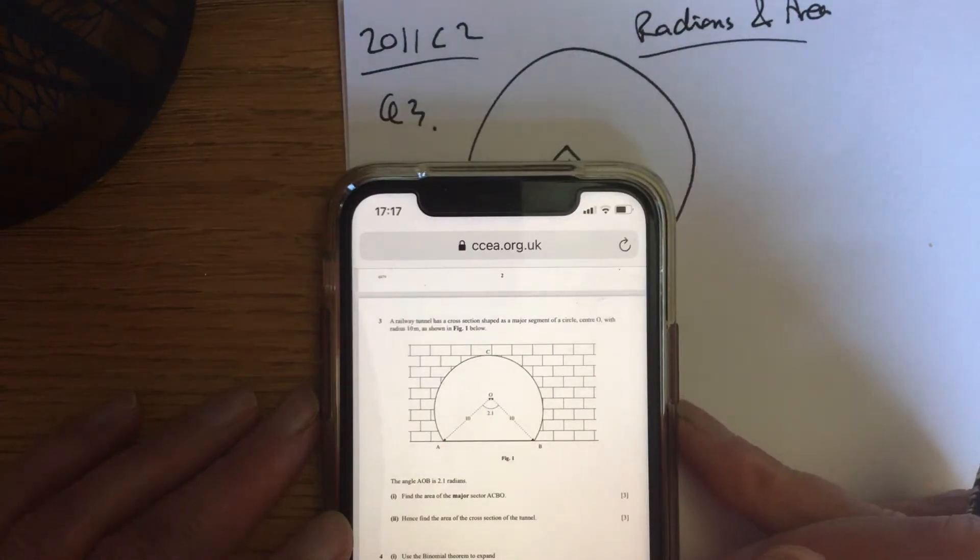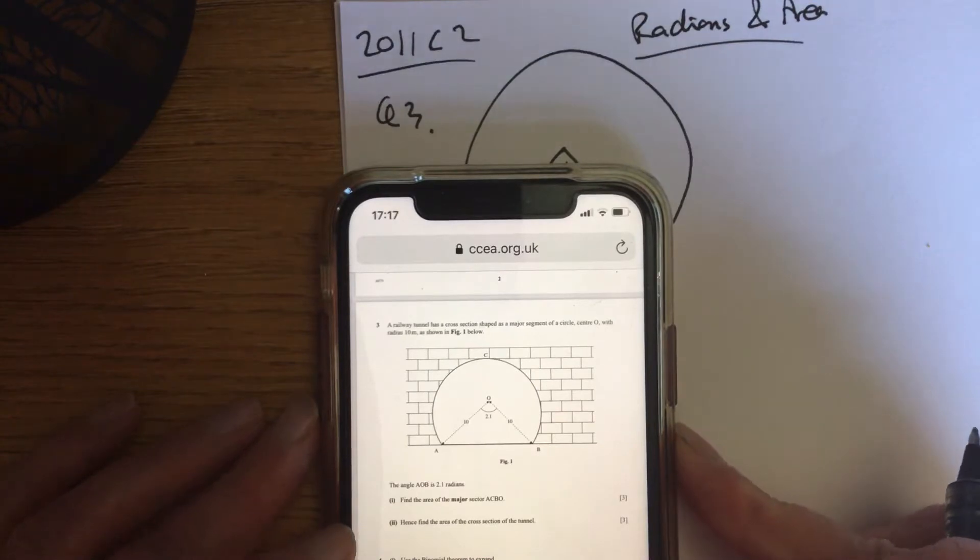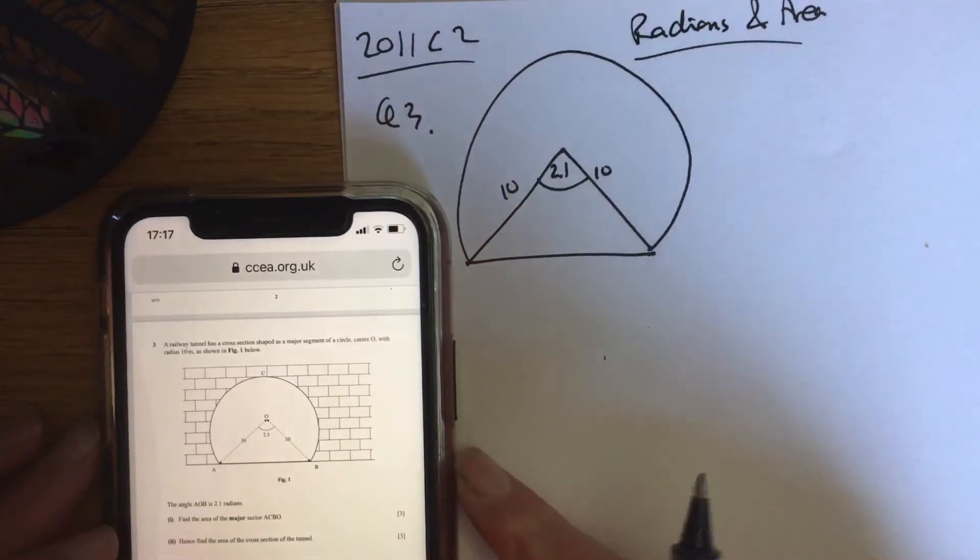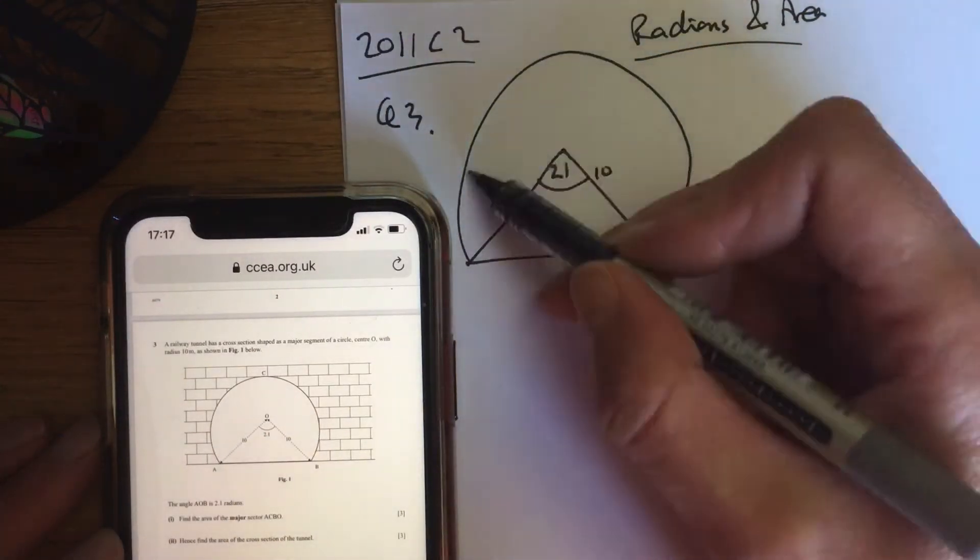A railway tunnel has a cross section which is a major segment of the circle. It's center O with radius 10. So I've just drawn a wee picture there. Find the area of the major segment. So find this area.